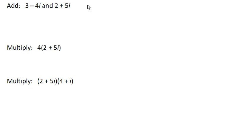So adding the real parts, 3 plus 2 is 5. Adding the imaginary parts, negative 4i plus 5i is plus 1i. So we could write that as 5 plus i.